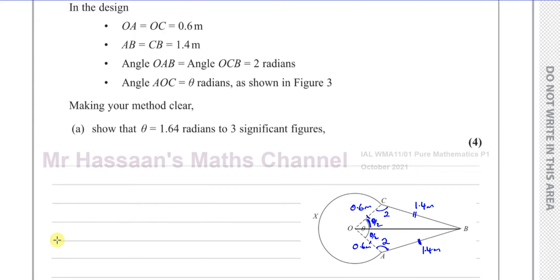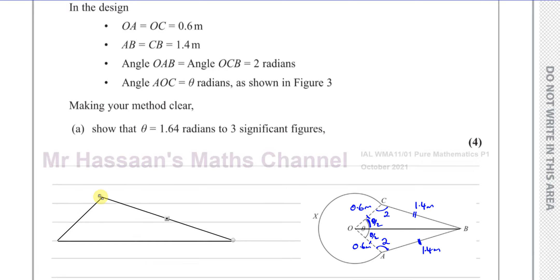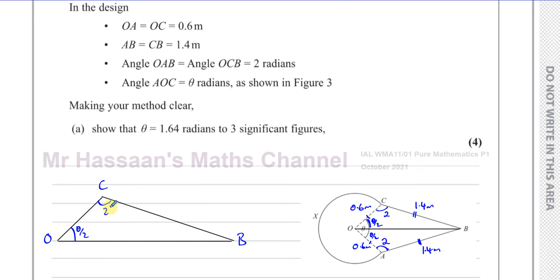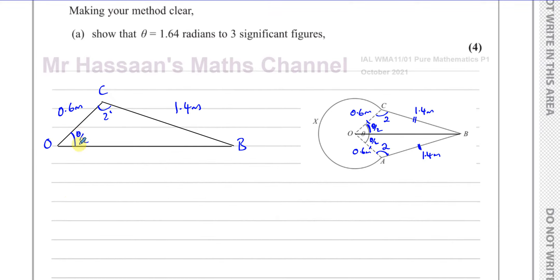I'll draw just one of those triangles — the top triangle OCB. In this triangle, the angle at O is theta divided by 2, the angle at C is 2 radians, the side CB is 1.4 metres, and the side OC is 0.6 metres. I need to find the angle theta over 2 and then double it.